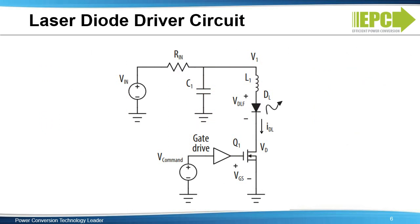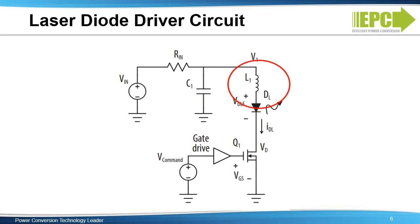The simplest and most common laser driver is the resonant capacitive discharge driver shown here. FET Q1 discharges capacitor C1 resonantly through stray inductance L1 and laser diode DL to achieve the fastest current rise time desired. C1 is charged to a relatively high voltage, usually 25 to 150 volts. FET Q1 must be able to withstand the voltage, conduct the peak current, and turn on in one nanosecond or less. The eGaN FET is the only readily available cost-effective semiconductor switch that can meet these requirements.